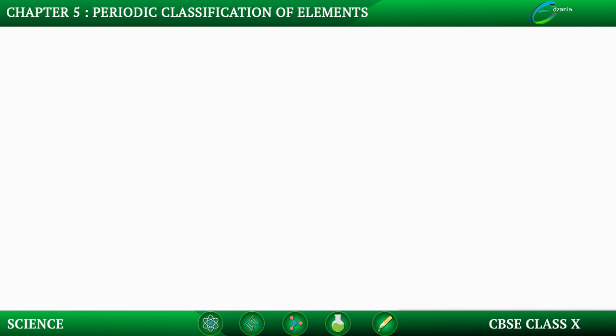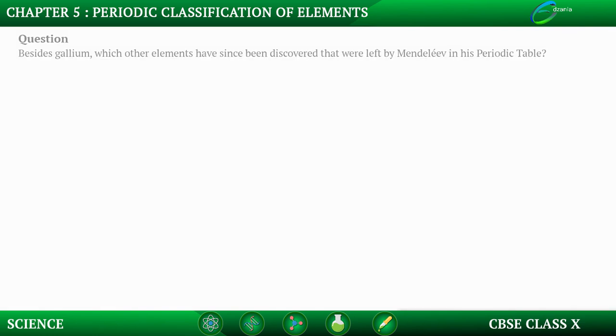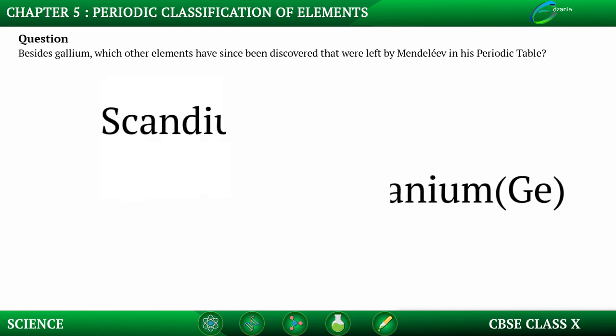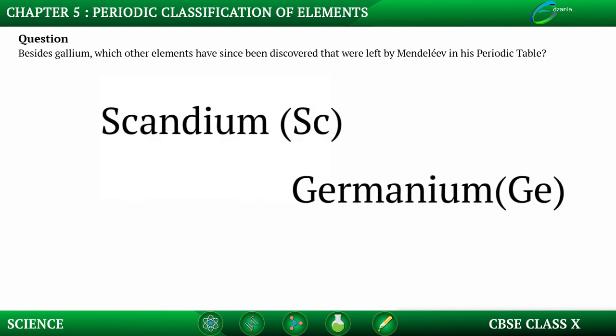Question: Besides gallium, which other elements were discovered that Mendeleev had left gaps for in his periodic table? The other elements discovered were scandium and germanium.